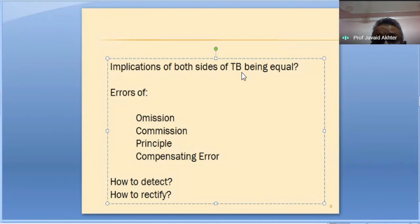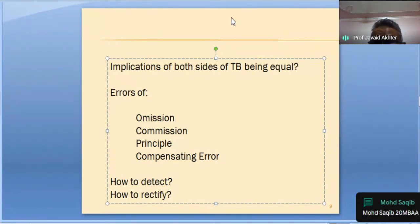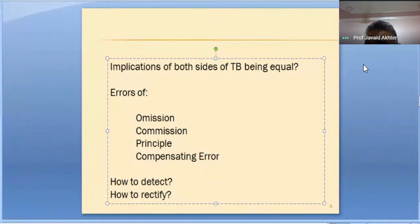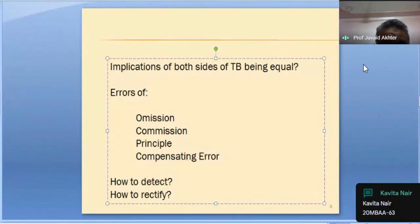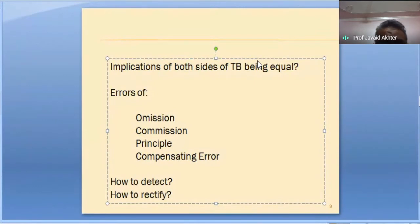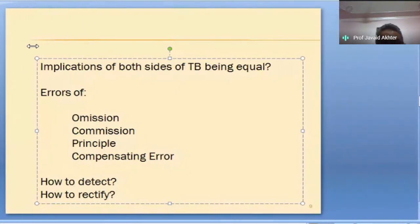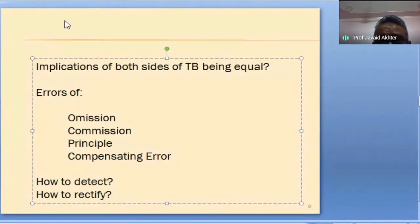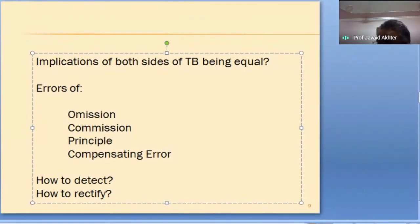What happened is we could not record — so what do we do to rectify this? Anyone? We should record it now. It's very simple: if you forgot to record an entry, you record it now. Suppose you deposited money in the bank and forgot to record it, the only course of action is that you record it.